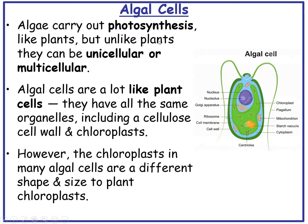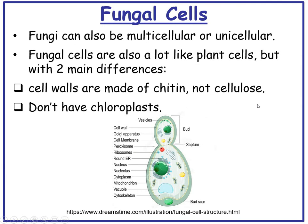Algal cells also carry out photosynthesis like plants, but unlike plants they can be either unicellular or multicellular. Algal cells are a lot like plant cells — they have all the same organelles including a cellulose cell wall and chloroplasts. However, the chloroplasts in many algal cells are a different shape and size to plant chloroplasts. Fungal cells can also be multicellular or unicellular, and are a lot like plant cells but with two main differences: cell walls are made of chitin, not cellulose, and they don't have chloroplasts.